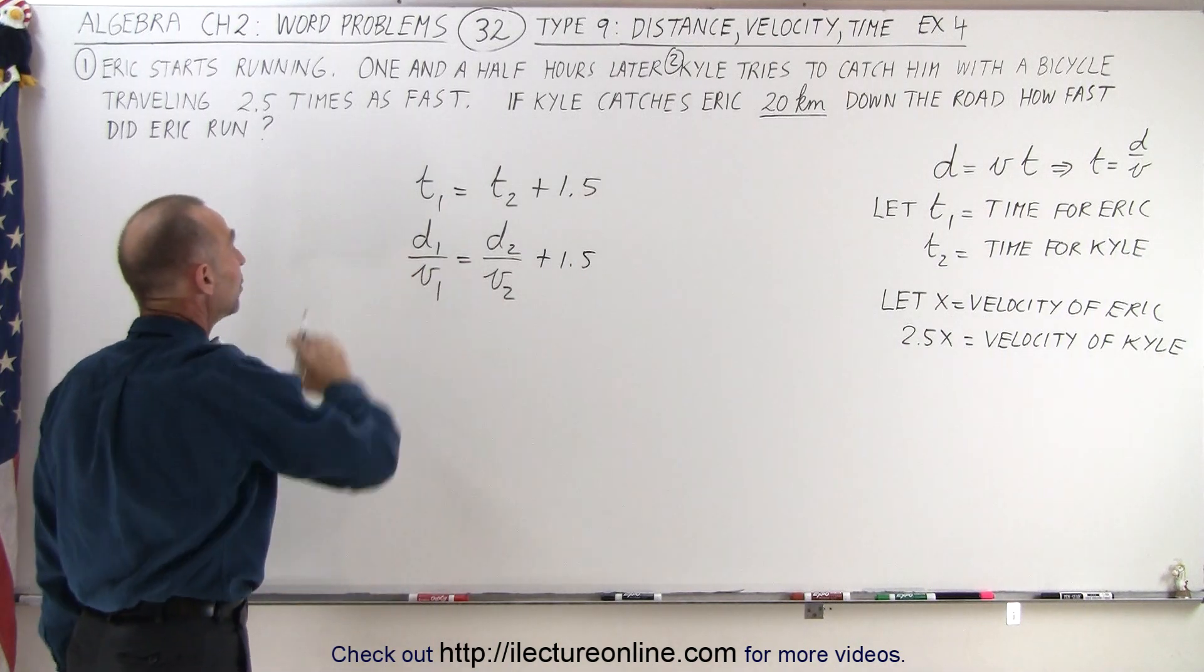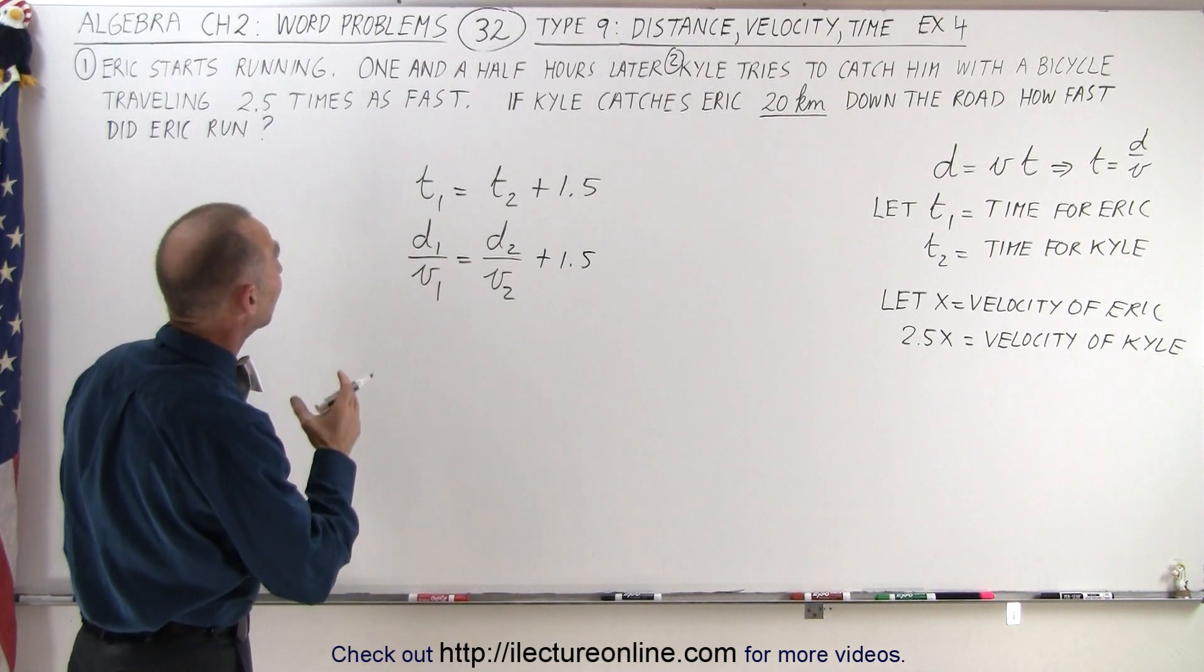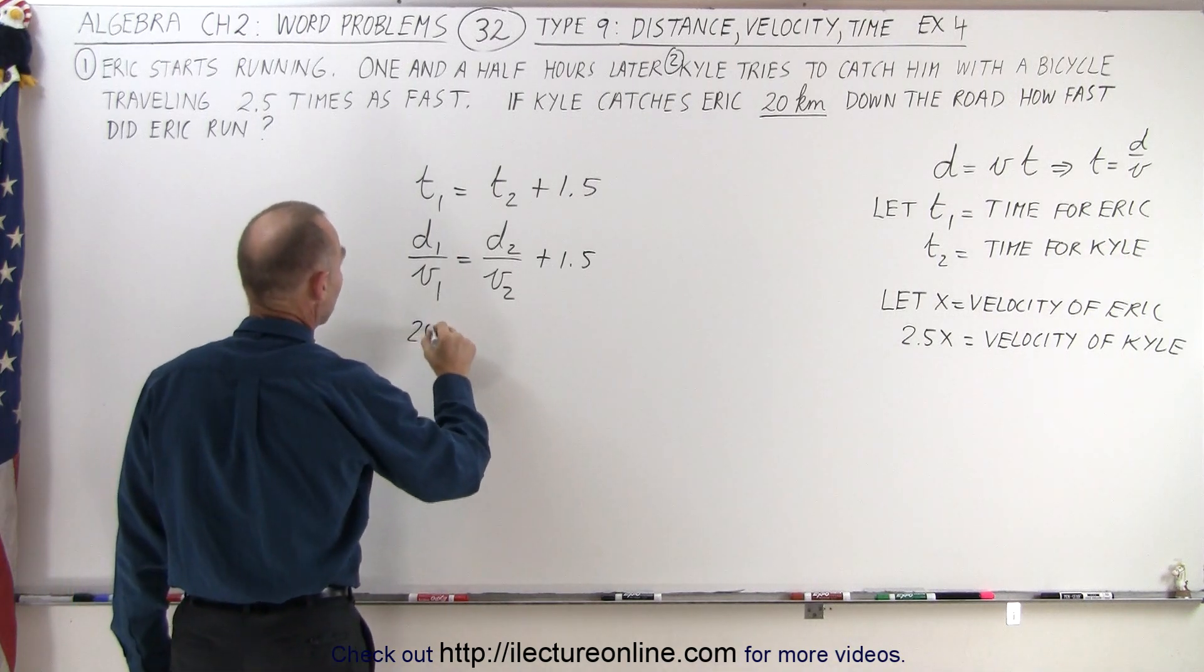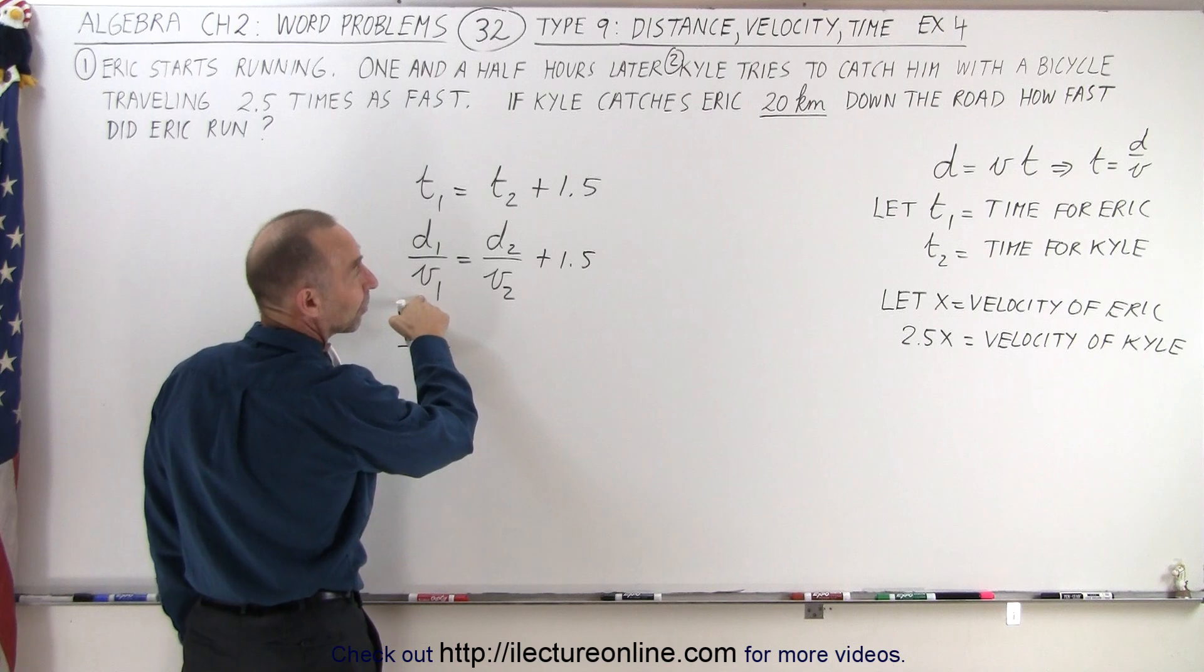Now we just have to plug in what we know. Well we know that distance one is equal to distance two, or 20 kilometers, so we get 20 divided by velocity one.